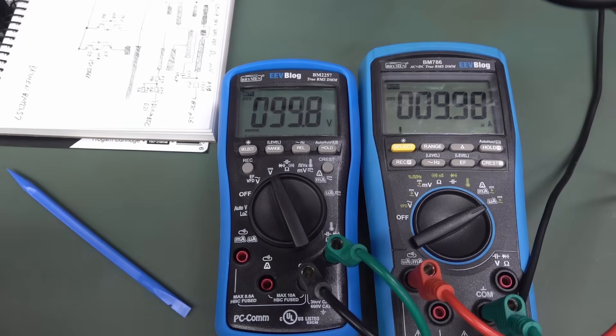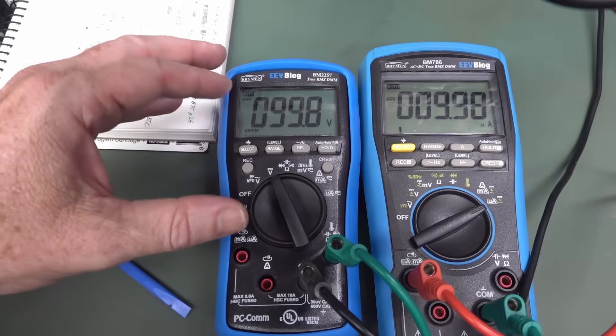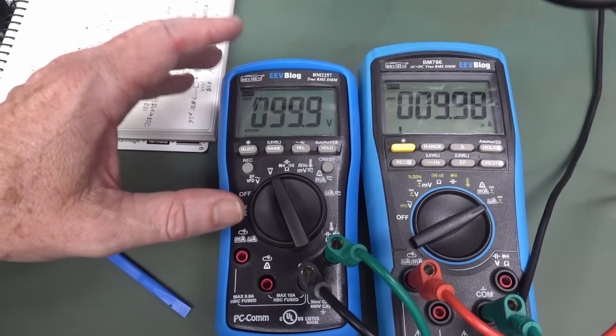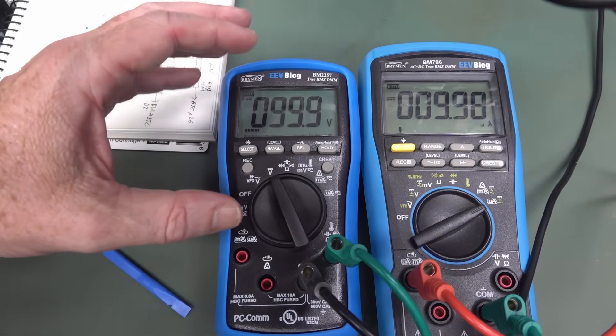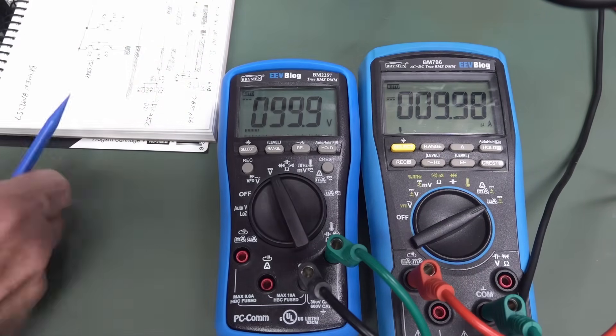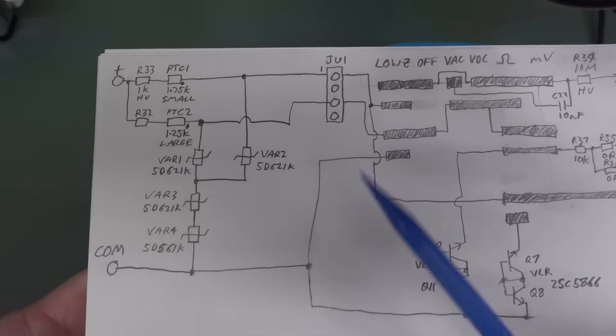Hi, some people on the EV blog forum have been talking about the potential leakage current at high voltage in the new BM2257 multimeter with the MOV configuration that I just released a video this morning on the main channel.